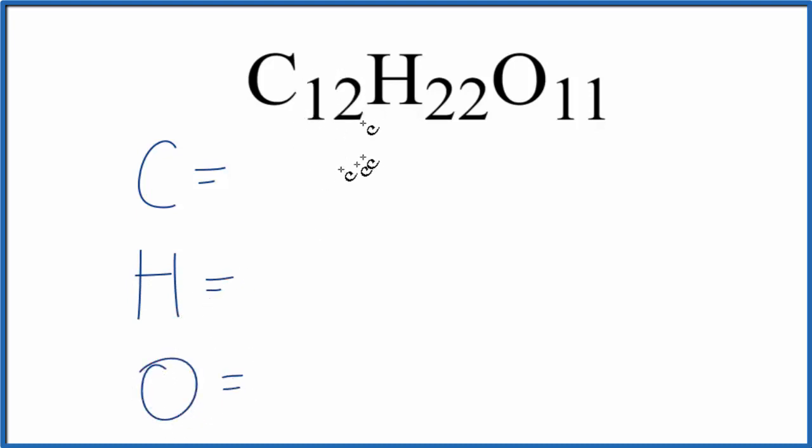For the carbon, we have a 12 as our subscript, so we have 12 atoms of carbon in one molecule of sucrose. For hydrogen, we have 22 molecules, and then for oxygen, we have 11.